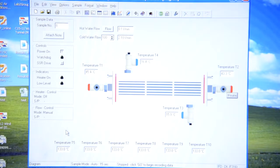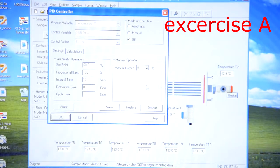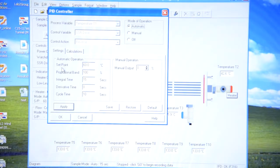Now I will show you how to perform Exercise A. First of all, you should select heater and put it on automatic, and the set point should be equal to 60.